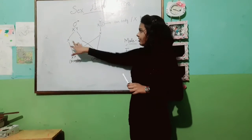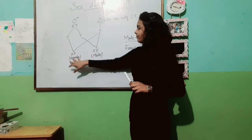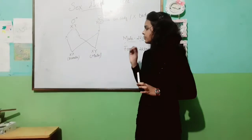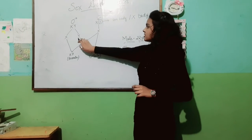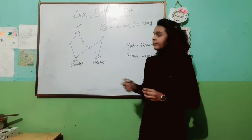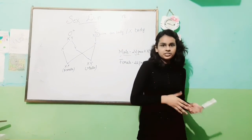So, when there is a cross between X gametes of male and female, we get a female child and its sex chromosome is XX. There is a 50% chance of getting a female child or a male child.